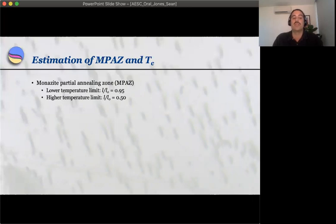And the higher temperature limit has been defined as a track length reduction of 0.5, which corresponds to the final rapid fading of tracks observed in the study.